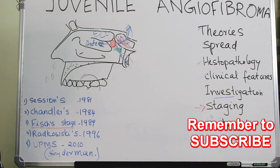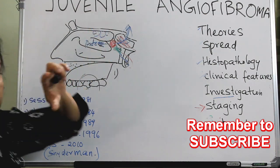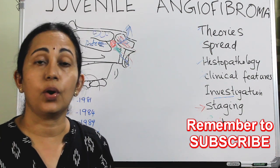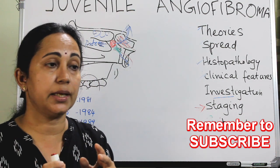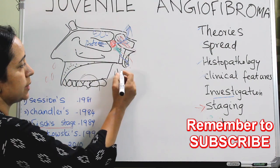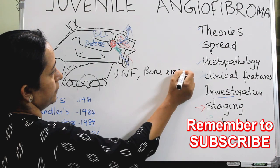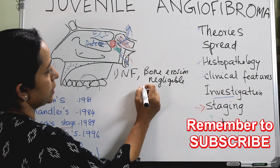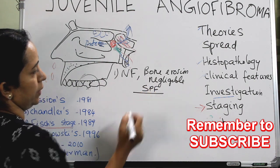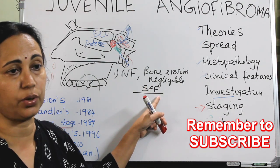Fisch staging has four stages. Stage 1 is the tumor limited to the nasopharyngeal cavity with negligible bone erosion. Or if there is bone erosion, it is limited to the sphenopalatine foramen, which is the site of origin of JNA. So stage 1 means tumor confined to the nasopharyngeal cavity with negligible or limited bone erosion of the sphenopalatine foramen.